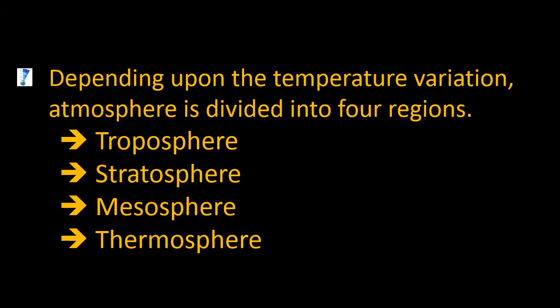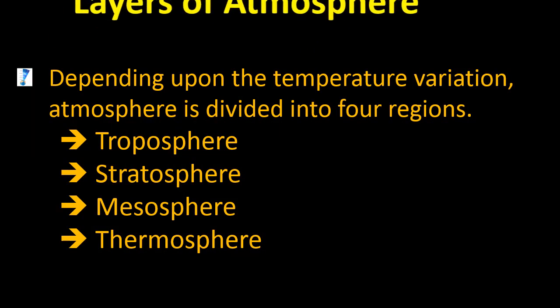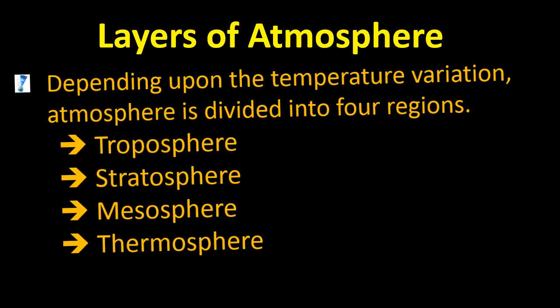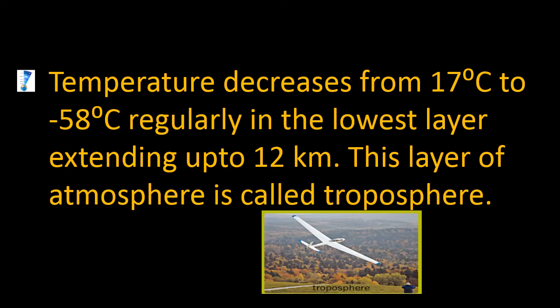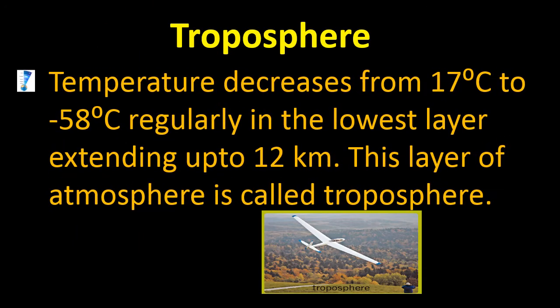Depending upon temperature variation, the atmosphere is divided into four regions: troposphere, stratosphere, mesosphere, and thermosphere. Troposphere extends up to 12 km. Temperature decreases from 17 degrees Celsius to minus 58 degrees Celsius in this lowest layer extending up to 12 km, and this layer of the atmosphere is called troposphere.